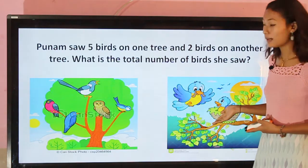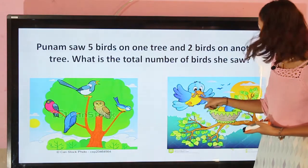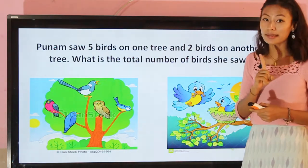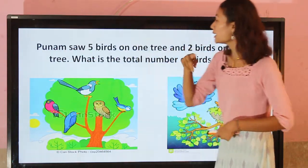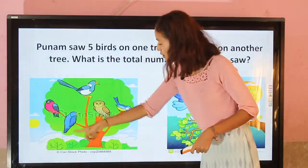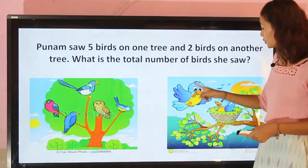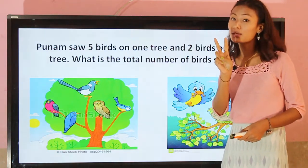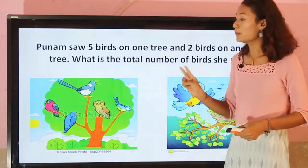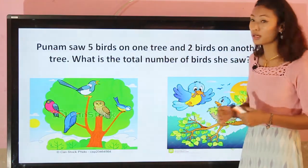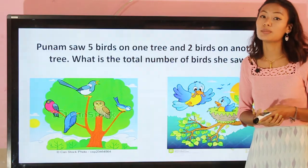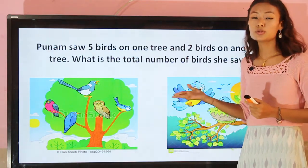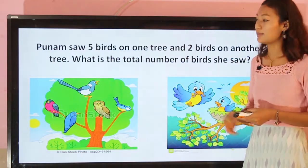Poonam saw five birds on one tree and two birds on another tree. Now you have to count the birds of both trees together and find out the total number of birds Poonam saw. There are five birds on one tree and two birds on another tree, so you have to add five and two together.